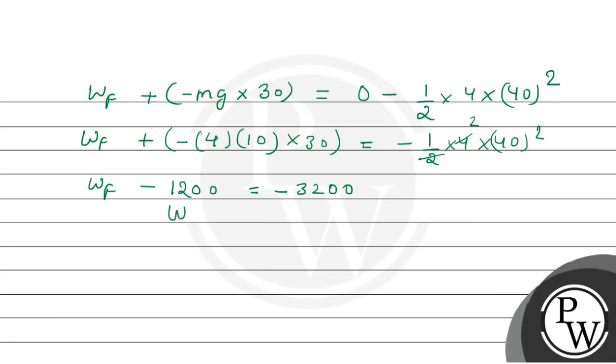Work done by air friction, this is negative so it becomes positive, minus 3200 plus 1200. If we solve this, we get negative of 2000 joule. So, the work done by air friction is minus 2000 joule.